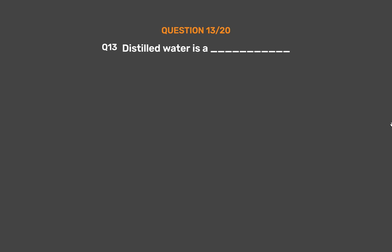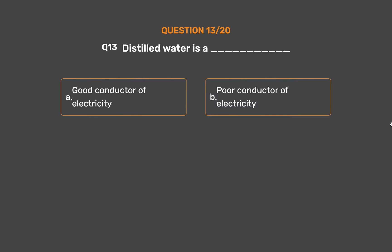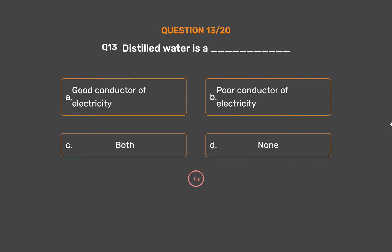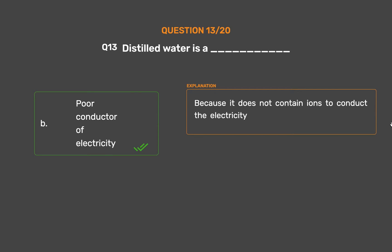Question No. 13: Distilled water is a underscore. Option A: Good conductor of electricity. Option B: Poor conductor of electricity. Option C: Both. Option D: None. The correct answer is Option B: Poor conductor of electricity, because it does not contain ions to conduct electricity.